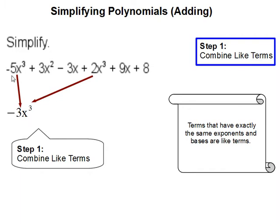So in this case, negative 5x to the third and 2x to the third, they have the same base and they have the same exponent. So these two terms are like terms. So negative 5 plus positive 2 becomes negative 3 and x to the third remains the same.